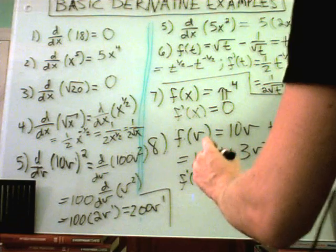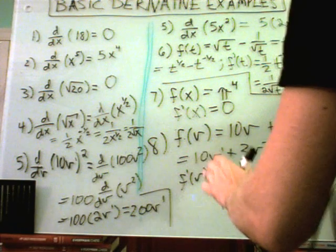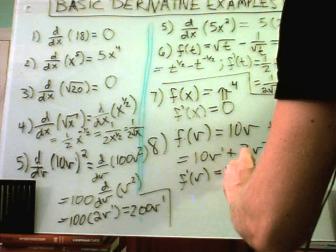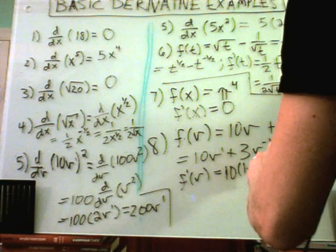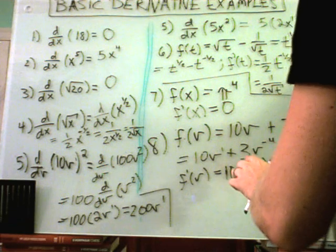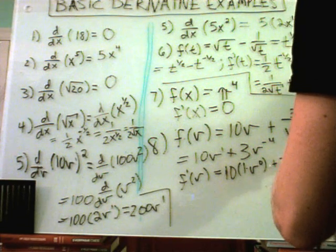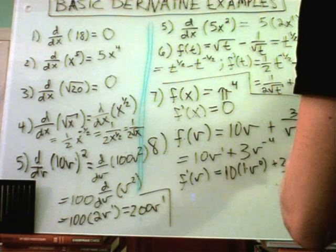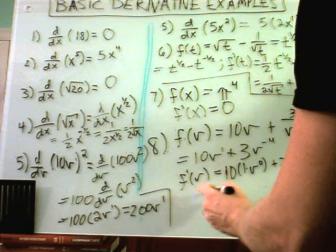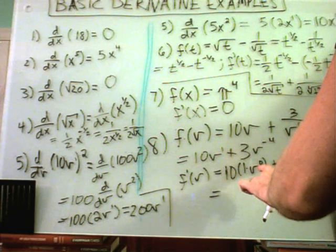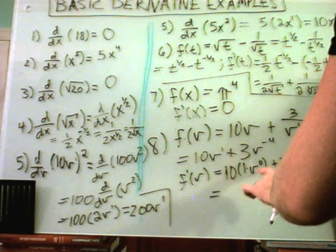So 10 times v. If you want to do this the long way, you could think about it as we'll leave the 10 alone. You take the derivative of v to the first, so you'll get one times v to the zero power. I'm going to leave the three alone. V to the negative fourth, the negative four comes out front, v subtract one away, you'll get to the negative fifth.